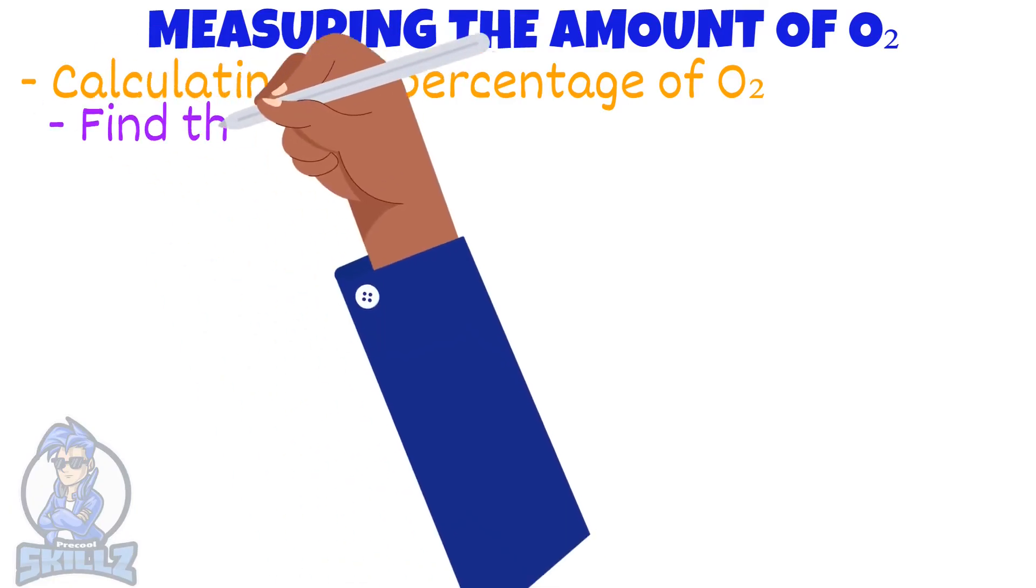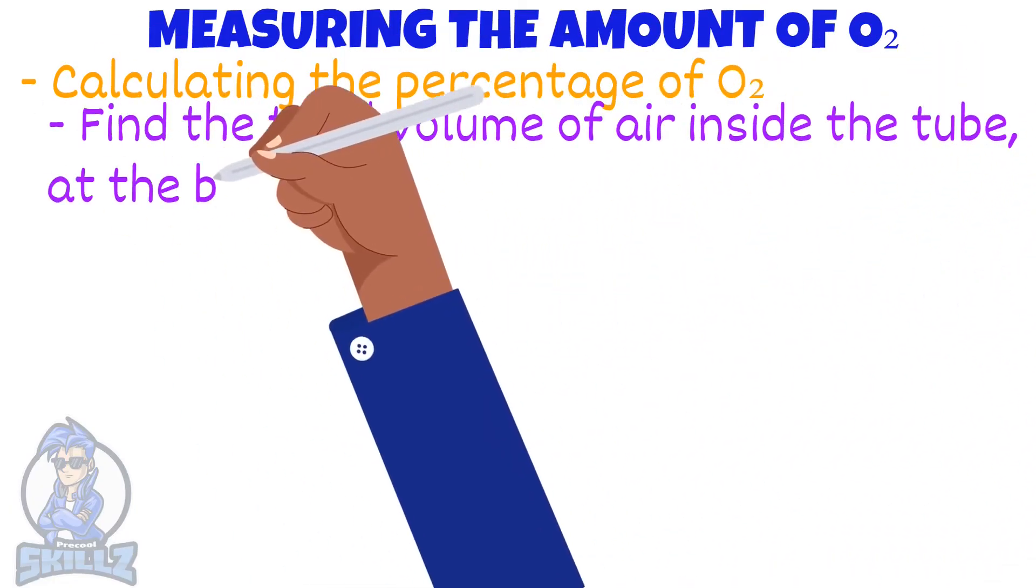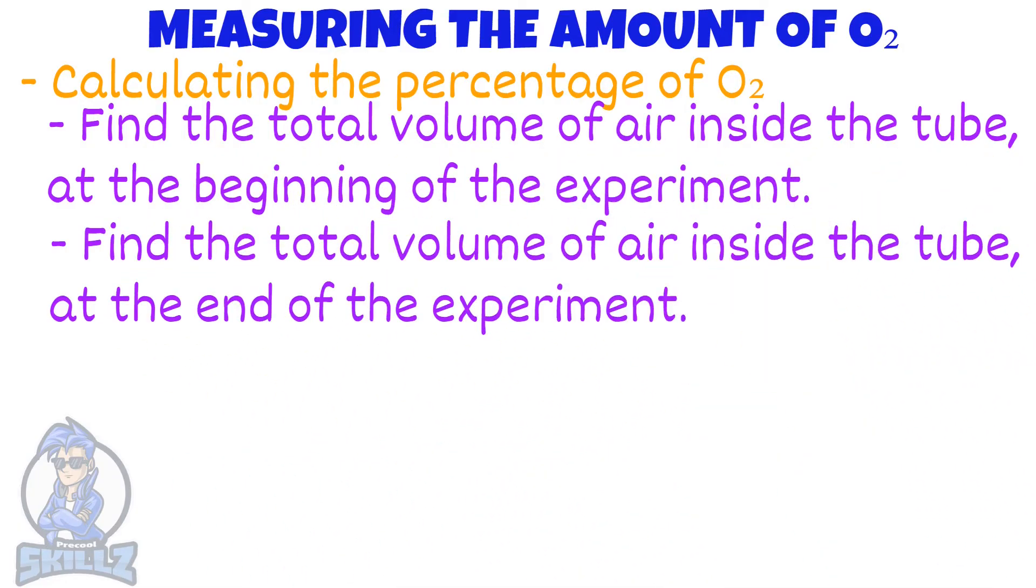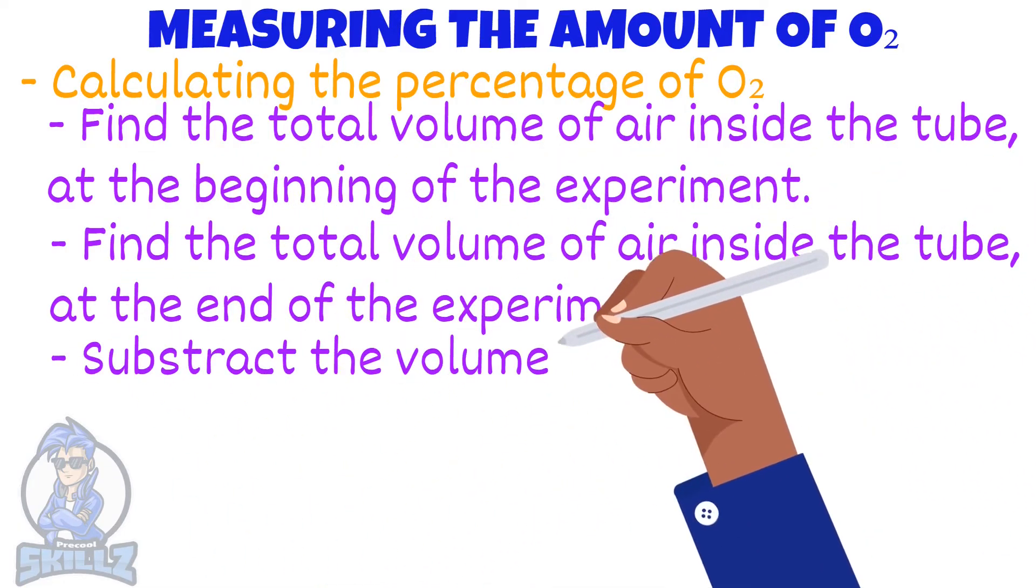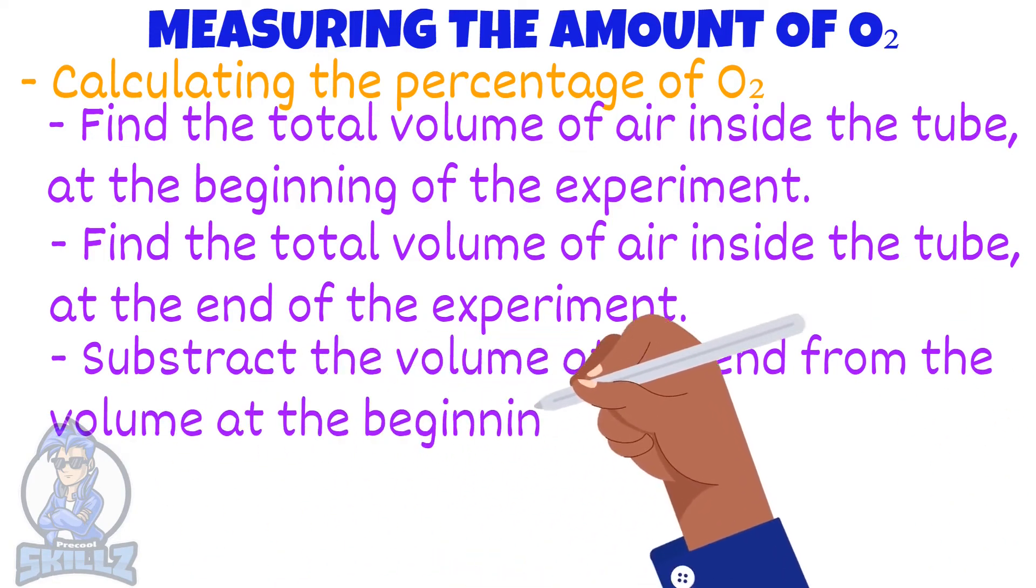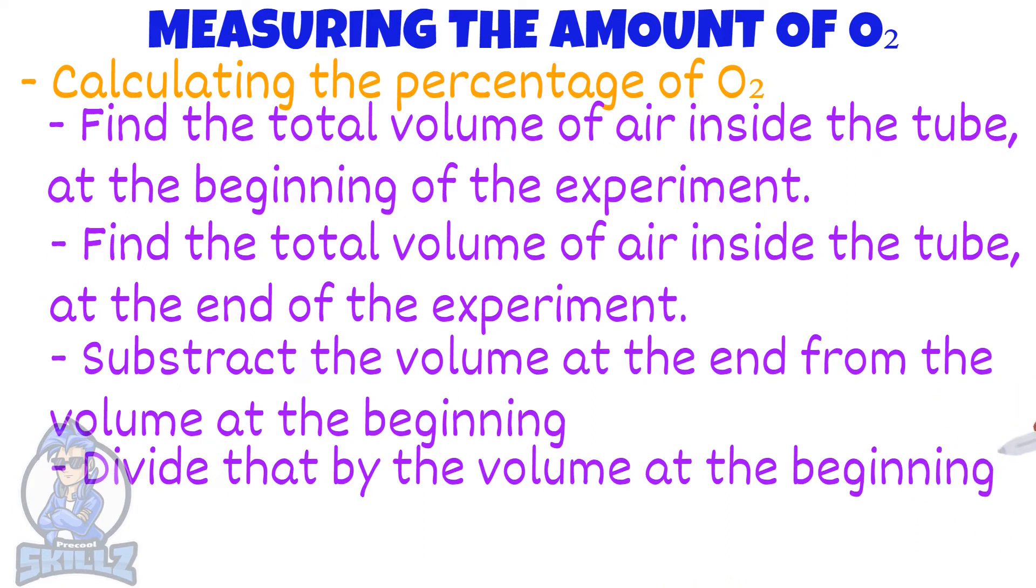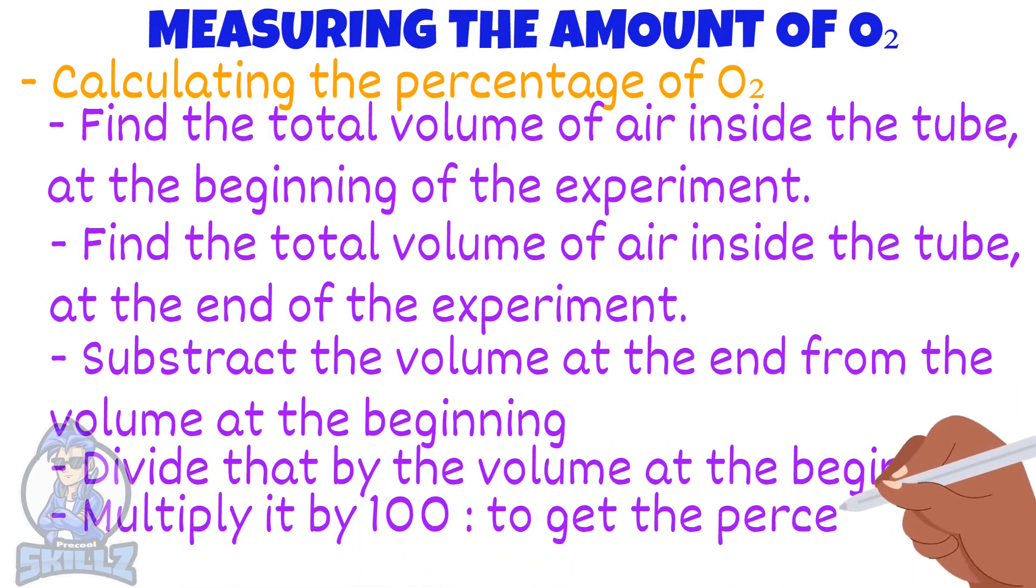First, you have to find the total volume of air at the beginning of the experiment, and then the total volume of air at the end. After that, subtract the amount of air at the end from the amount at the beginning, and finally divide that answer by the volume of air at the beginning. Then multiply it by 100 to get the percentage.